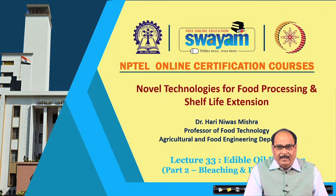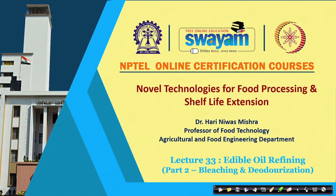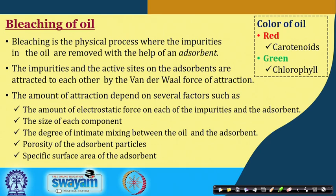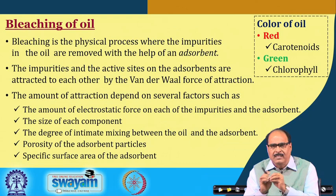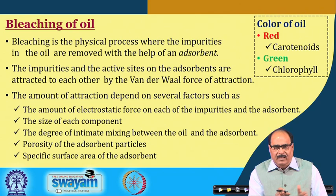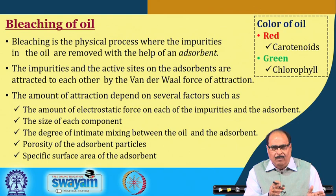Hello friends. In the first part of the Edible Oil Refining lecture, we studied the different operations carried out in oil refining, like degumming, neutralization, bleaching, and deodorization. These are the major steps of the edible oil refining process, and what different components are removed in these steps. These steps are supported by washing, centrifugation, and separation steps.